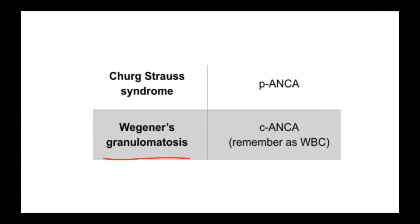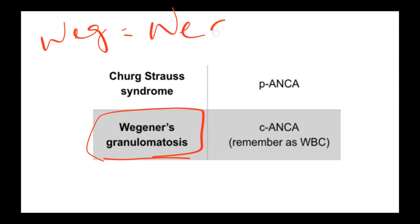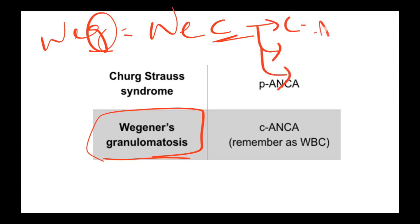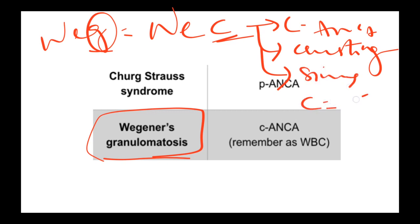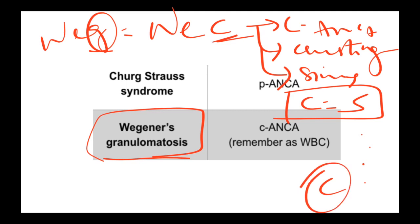For Wegener's granulomatosis, just replace G with C — so everything is associated with C. The antibody is c-ANCA. Clinical features include nasal crusting and sinusitis — sinusitis also starts with S, which equals C in this mnemonic. So remember c-ANCA for Wegener's: replace G with C.